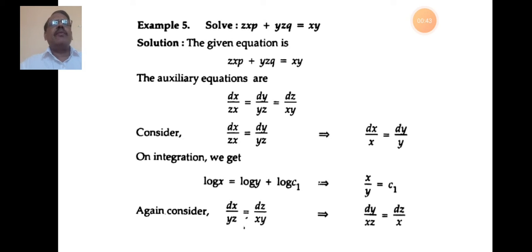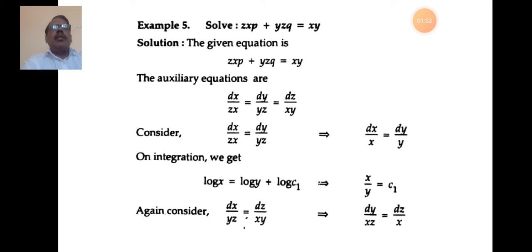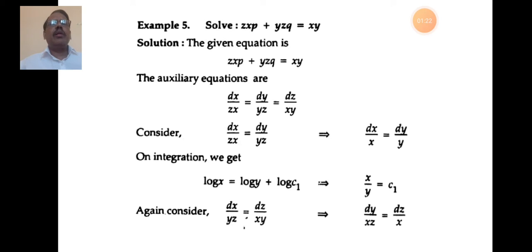For the working rule for finding the solution of a partial differential equation, first you compare the given equation with the standard equation: capital P·p + capital Q·q = R. So first you write what is capital P, what is capital Q, and what is capital R. Then you write the auxiliary equation, which is given by dx/P = dy/Q = dz/R.